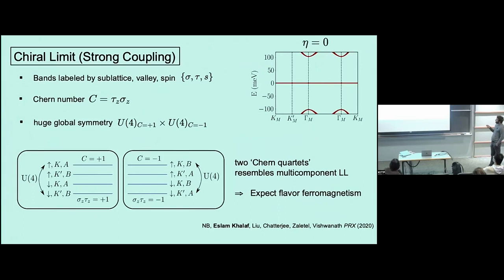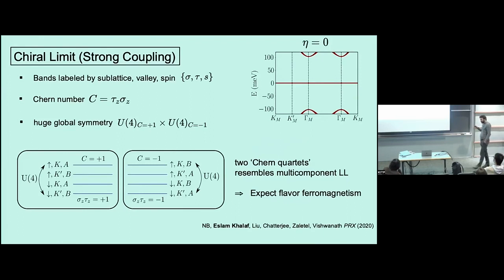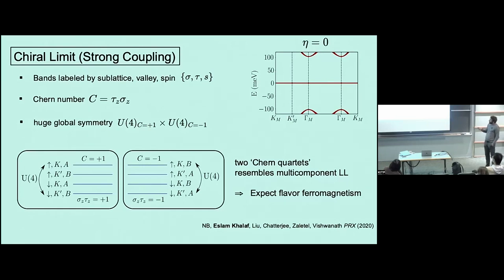This is called the chiral limit, where the Hamiltonian is completely off-diagonal in sublattice — it anti-commutes with σ_z, the Pauli-Z matrix acting on sublattice indices. In this limit at the magic angle, you get exactly flat bands with remote bands very far away. There is a nice basis for these exactly flat bands — zero modes — where the wave functions are exactly sublattice polarized, meaning every wave function exclusively lives on either the A or the B sublattice. In that basis, all bands have Chern number ±1, given by the valley quantum number times this sublattice quantum number, which is only a good quantum number in the chiral limit.